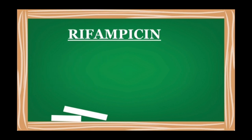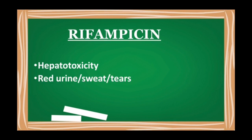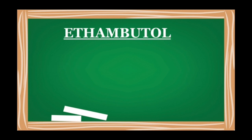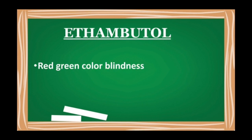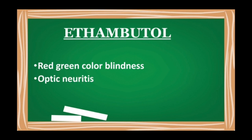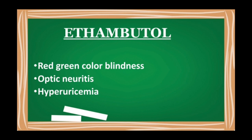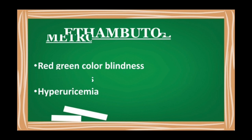Next is rifampicin. Its important side effects include red-green color blindness, where the patient cannot differentiate between the two colors; optic neuritis, where inflammation occurs in the optic nerves; and hyperuricemia, where uric acid levels in the blood increase.